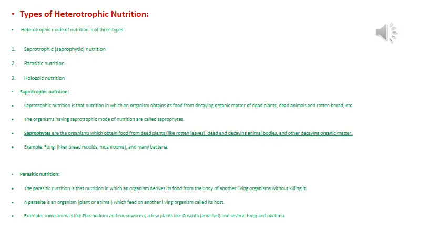Heterotrophic mode of nutrition is further divided into three types as shown in the slide: saprotrophic nutrition, parasitic nutrition, and holozoic mode of nutrition. In saprotrophic mode of nutrition, the organisms performing it are called saprotrophs, and they obtain food from dead and decaying organic matter — 'sapro' simply means rotten.